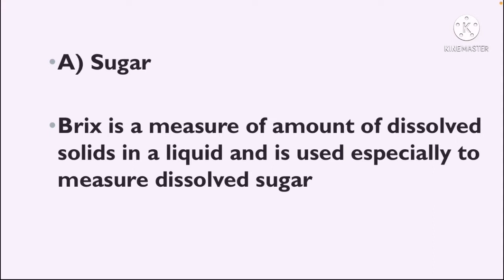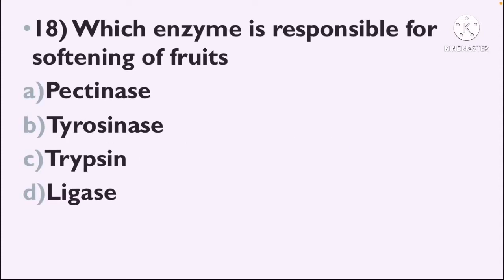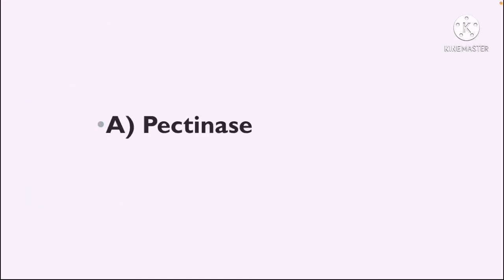Next question: Which enzyme is responsible for softening of fruits? Option A: Pectinase, Option B: Tyrosinase, Option C: Trypsin, Option D: Ligase. The correct answer is Option A — Pectinase is responsible for softening of fruits.